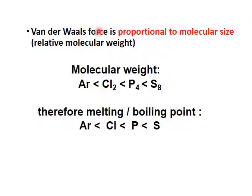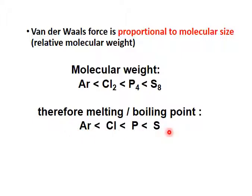Van der Waals forces are proportional to molecular size. The smallest molecular size is argon, and the strongest van der Waals forces are for sulfur S8. That's why the melting point and boiling point increase from argon, followed by chlorine, then phosphorus, with the highest being sulfur.